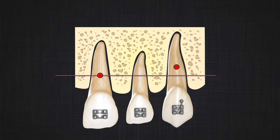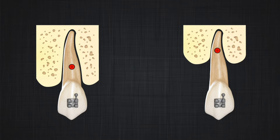On the other hand, if the tooth has a shorter root, the center of resistance moves lower. If the alveolar bone is lost — for example, if the patient had a periodontal problem — the center of resistance moves up. This is very important when treating patients with alveolar bone loss, because the movement can be completely different compared to a patient with healthy alveolar bone.